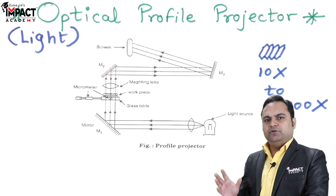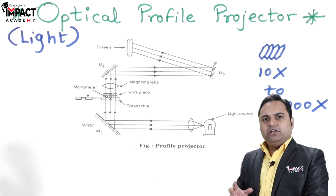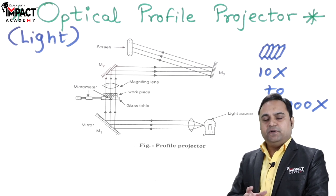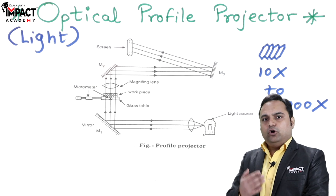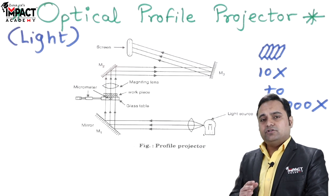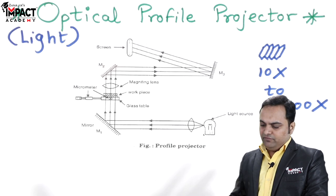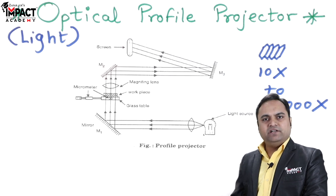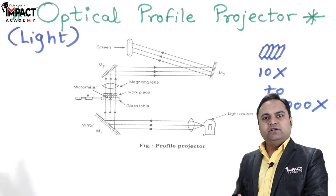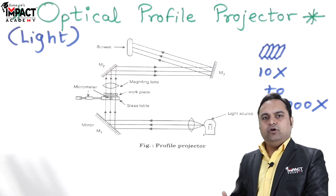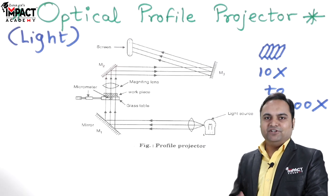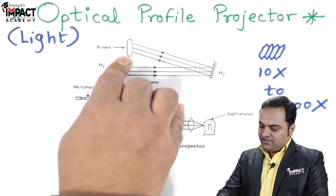In mechanical devices, we use gears and levers to magnify or amplify the reading. But when we have optical devices using light source, we use the mirrors, lenses, and condensers to amplify or make the instrument more sensitive.